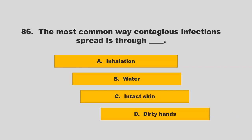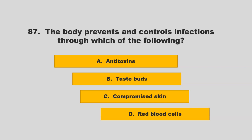The most common way contagious infections spread is through blank. Options: inhalation, water, intact skin, or dirty hands. The correct answer is D: dirty hands.